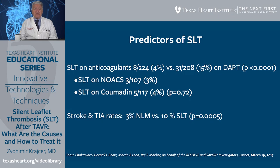Silent leaflet thrombosis has serious consequences, particularly related to stroke and TIA rates. When there was normal valve motion, the stroke/TIA incidence was only 3%, versus 10% when CT showed evidence of silent leaflet thrombosis — a statistically significant difference.